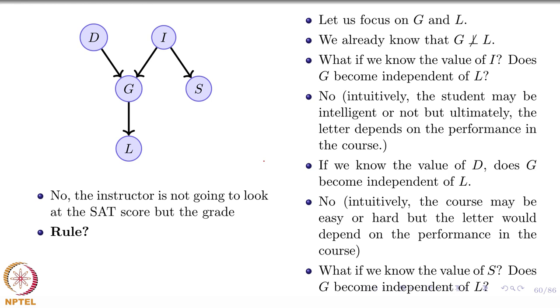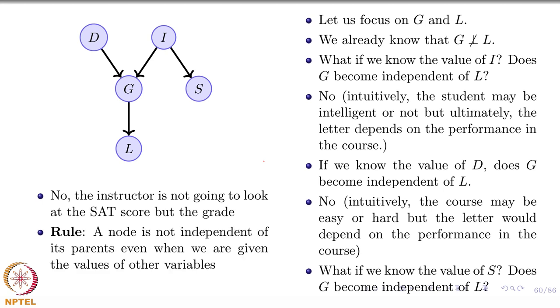So what is the rule here? What is the rule? So in the previous slide, we came up with the rule that a node is not independent of its parents. Now I want to augment that rule. A node is not independent of its parents even when you are given other random variables, right? Even when you are given the values of the other random variables. So this is the modified rule: a node is not independent of its parents even when we are given the values of the other variables. That was just as good as saying a node is not independent of its parents, right?